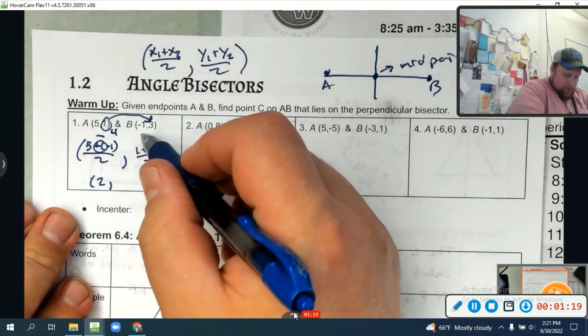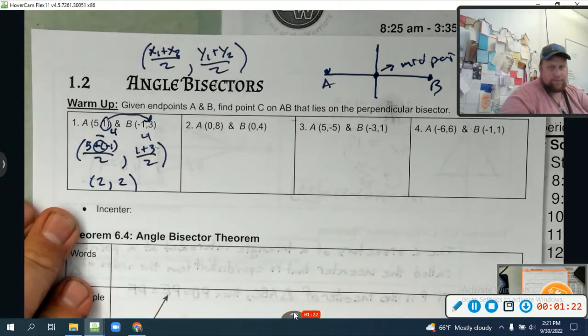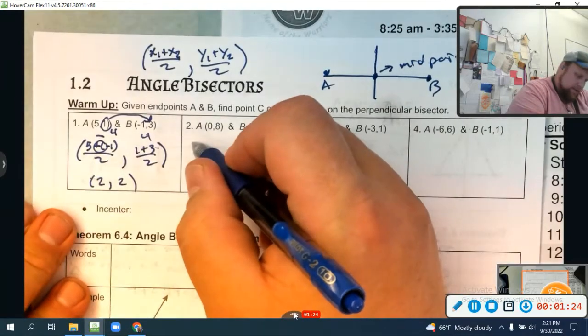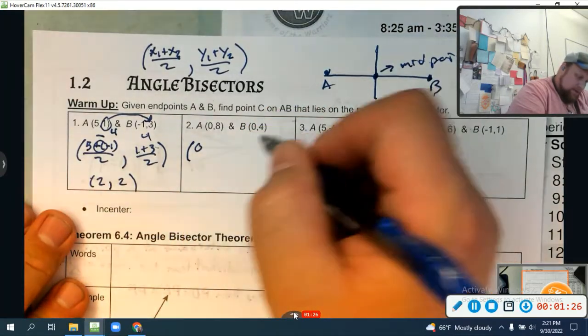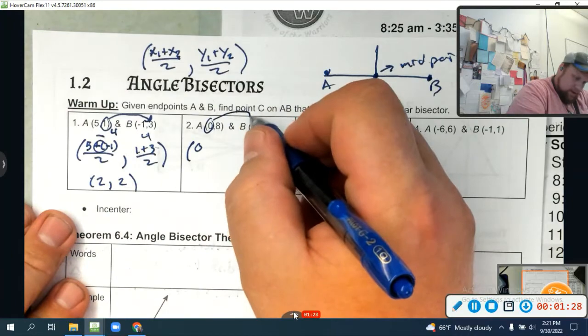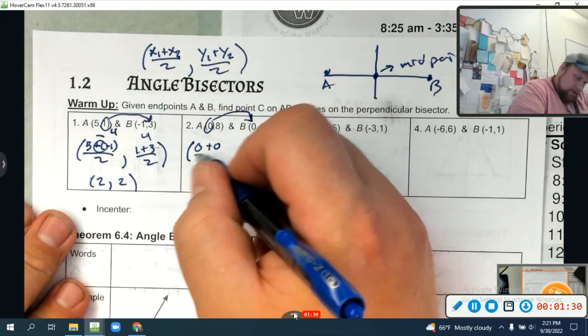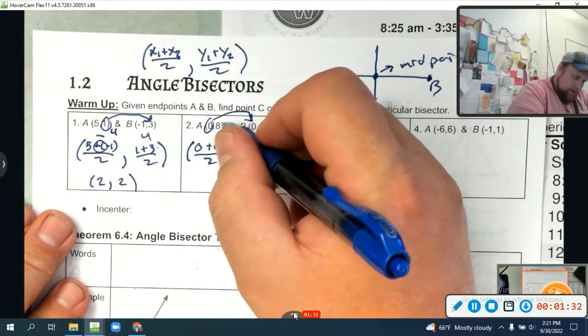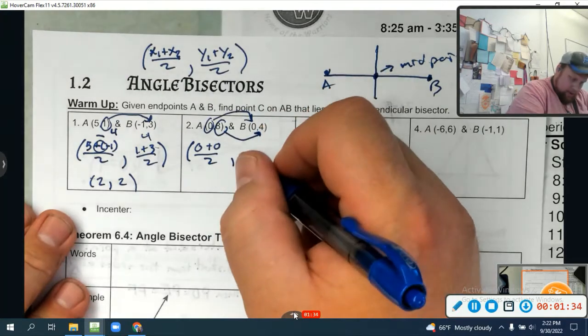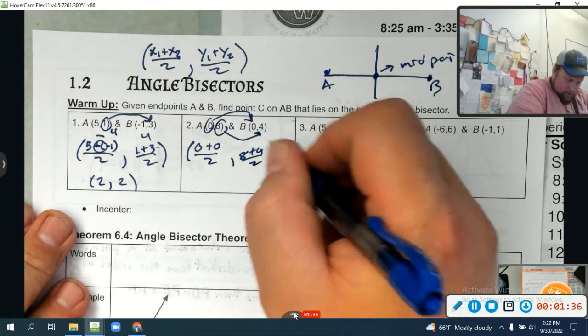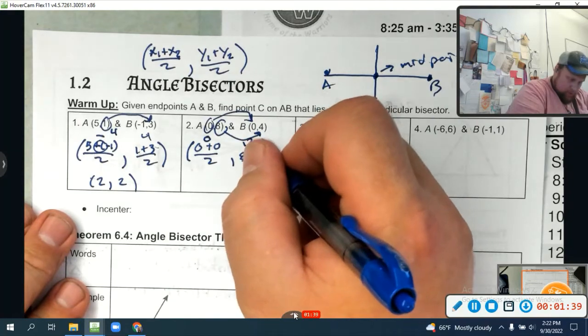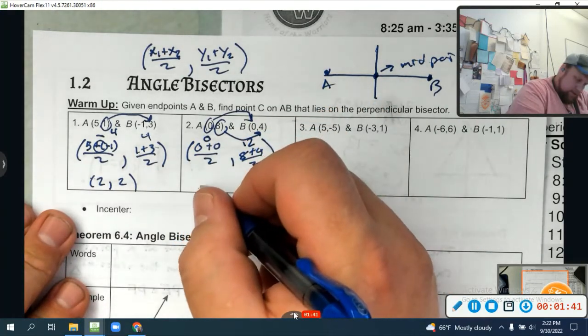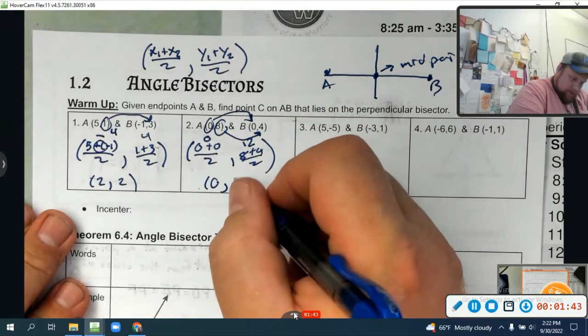1 plus 3 is 4, 4 divided by 2 is also 2. Okay, let's repeat this process. So I'm going to have 0 plus 0 over 2, which is 0, spoiler alert, and 8 plus 4 over 2. That's 0, and 12 divided by 2 is 6.